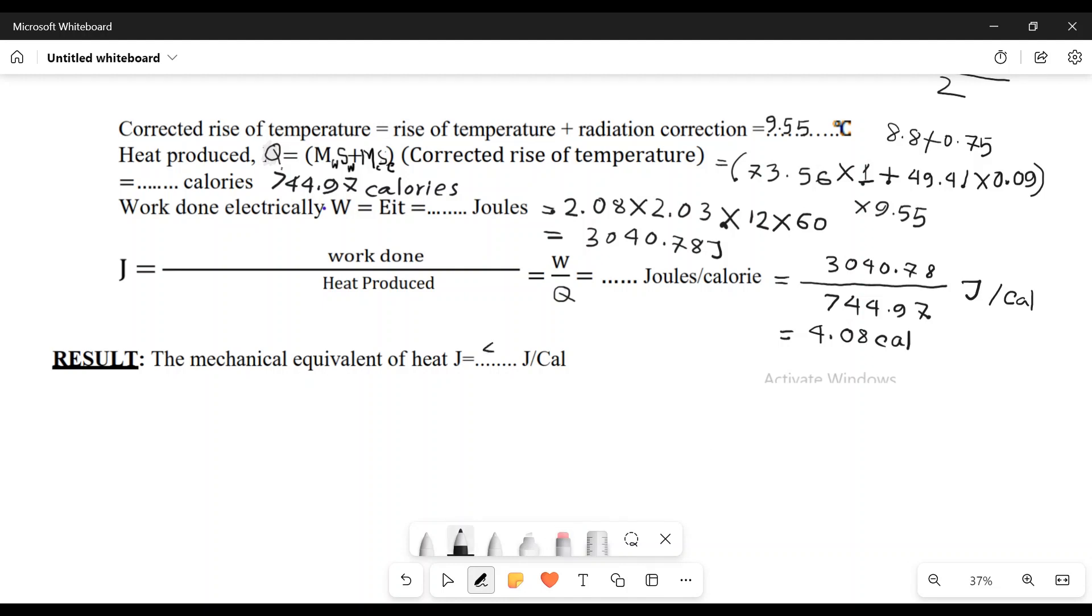The percentage error is (4.08 minus 4.18) divided by 4.18 times 100, which is 2.37 percent.